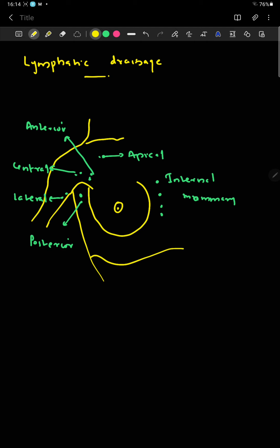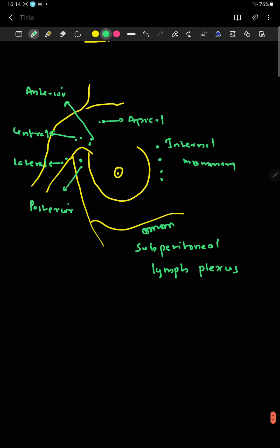Below the diaphragm there is a group of lymph nodes forming a subperitoneal lymph plexus. This is important because if cancer develops in the mammary gland, through this subperitoneal lymphatic plexus it can travel to and lodge in the ovary, causing a tumor there — that is called a Krukenberg tumor.